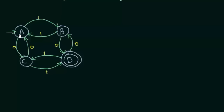There is something different about state A and state D. In state A we see an arrow coming from nowhere and pointing to A — this means A is the starting state or initial state. Whenever you see an arrow coming from nowhere pointing to a state, that is the initial state. And state D has a double circle around it. Whenever you see a double circle, it means that is the final state or terminating state. So state D is the final state of this DFA.